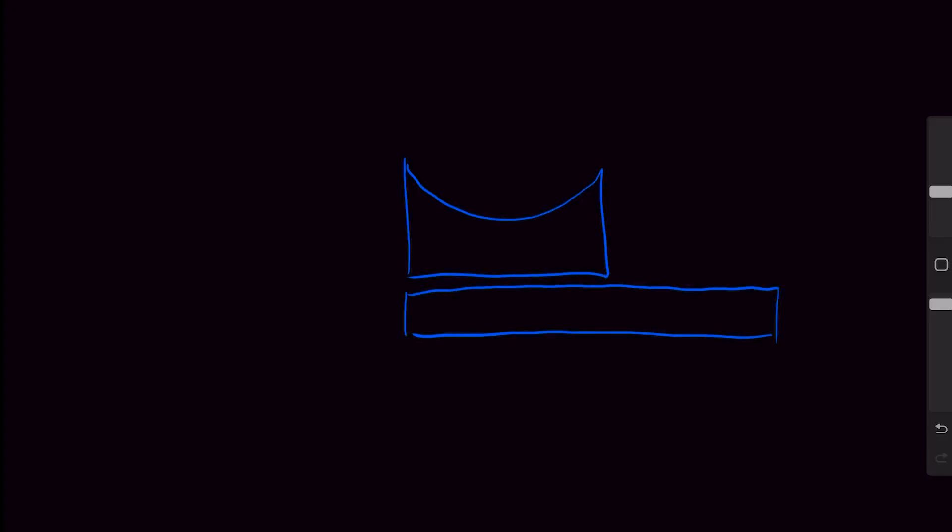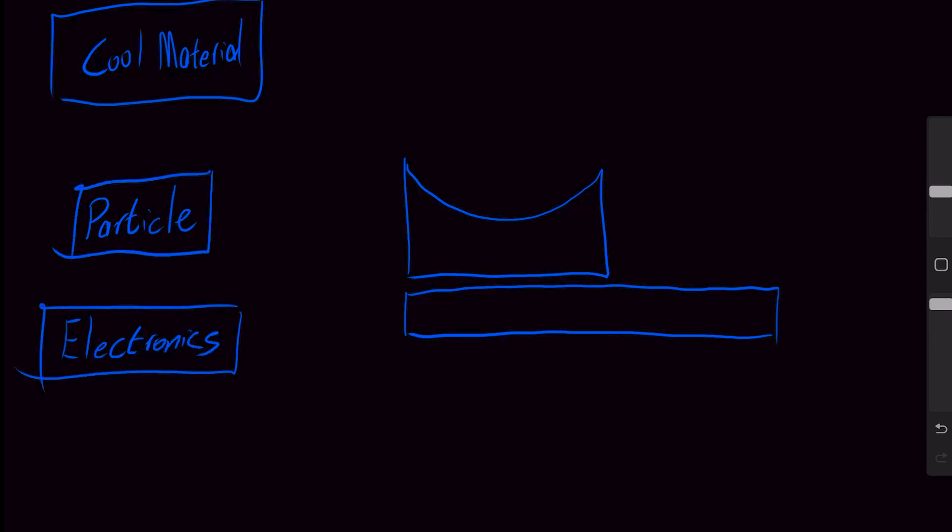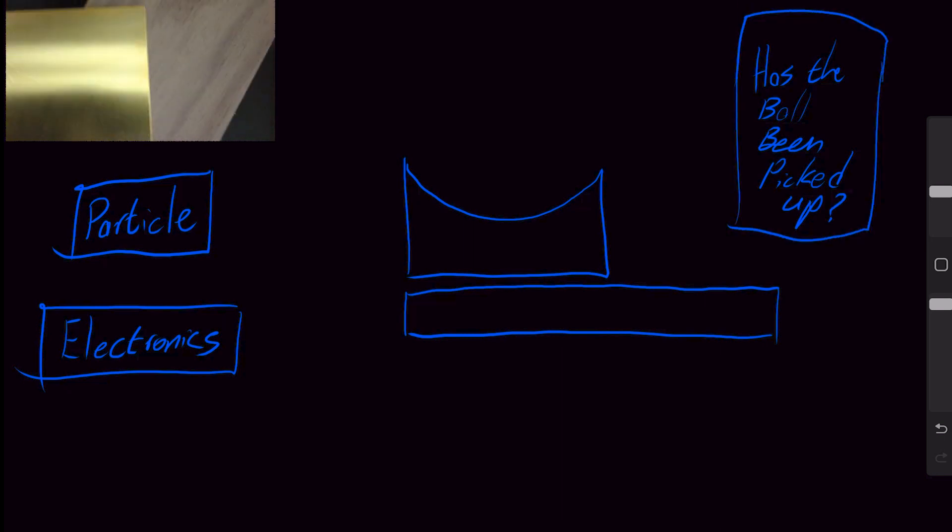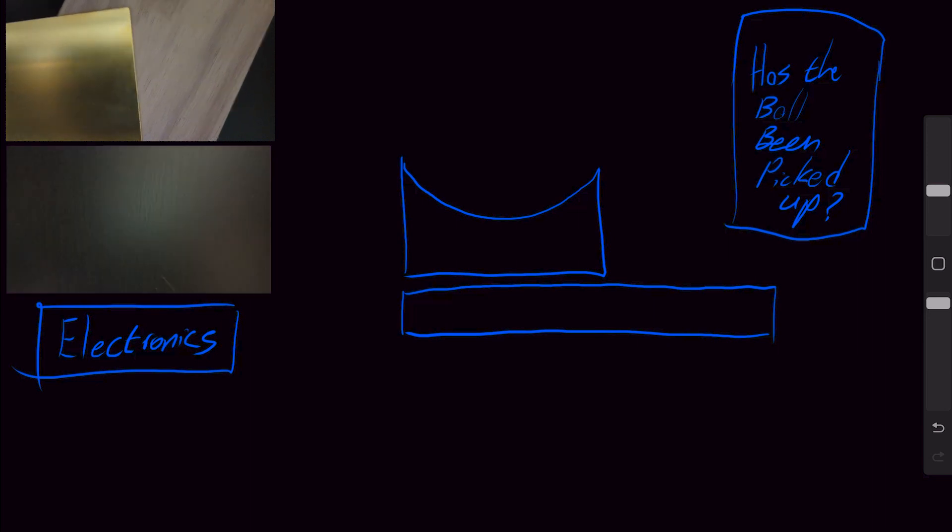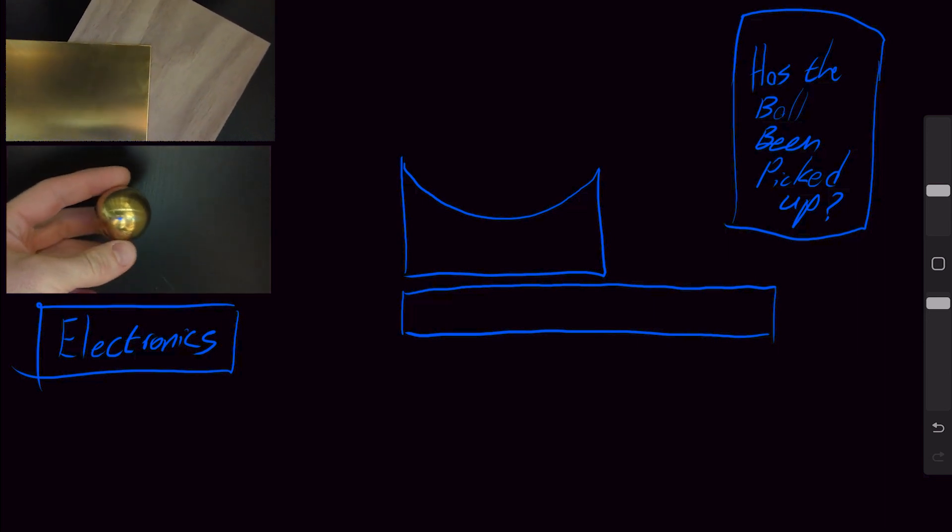Now onto the initial bill of materials and what is actually needed to make it. Turning this into a physical item that we can make, we're going to need some material for the parabolic surface, a particle, electronics to spin the device at a specific speed, and a method to detect the ball being picked up. I really like the look of walnut and brass, so I plan on using that for the parabola and other visual parts. For the particle, I'm going to start with a hollow brass ball.